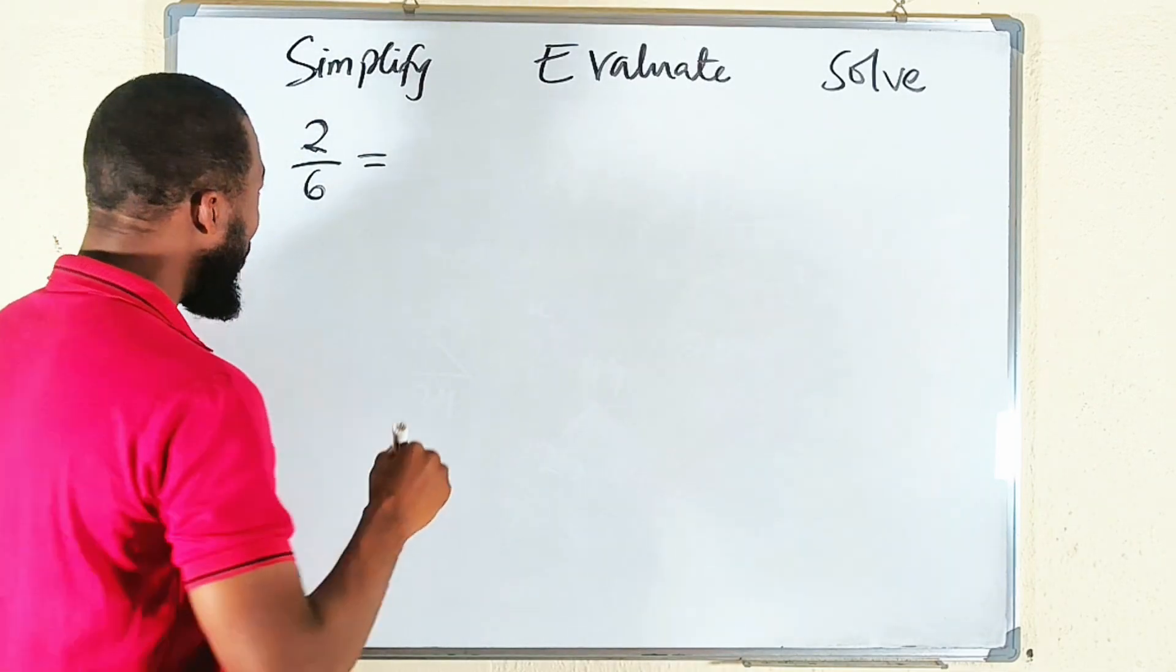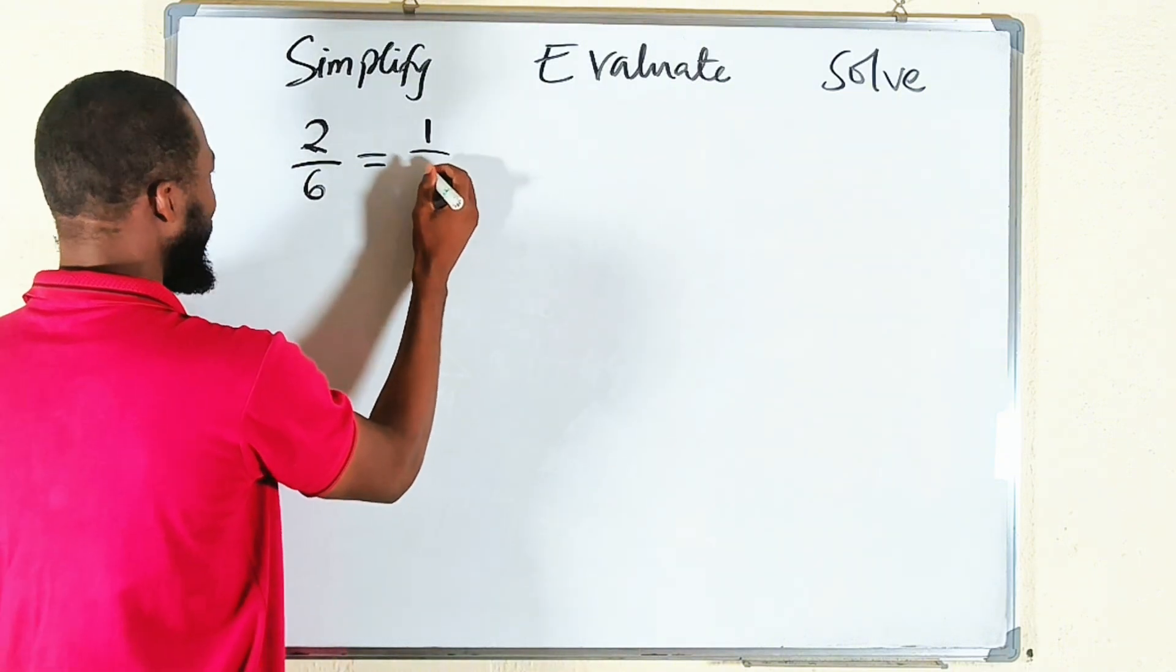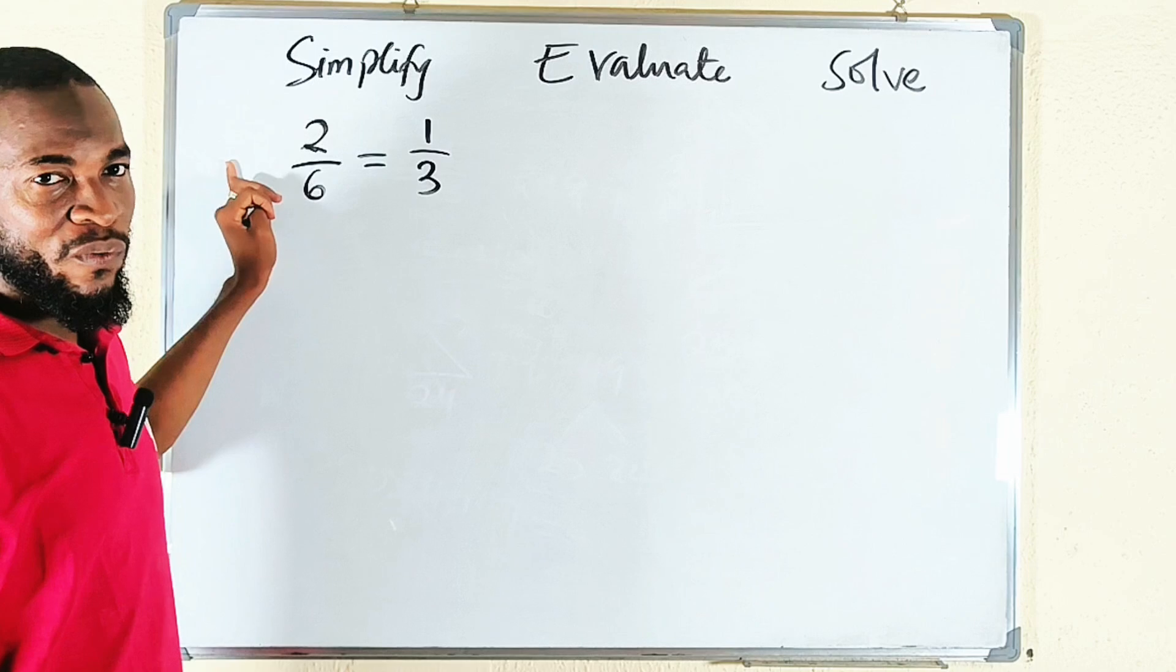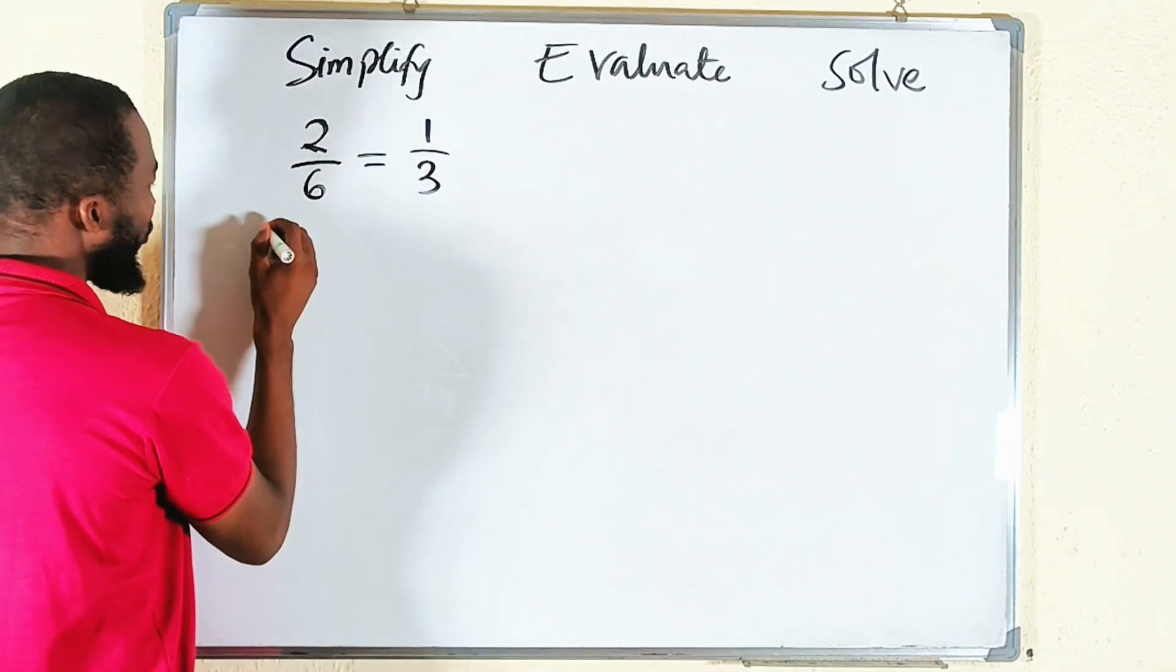2 divided by 2 is 1, and 6 divided by 2 is 3, so 1 over 3 is the simplified version of 2 over 6. And you may have more than one fraction.